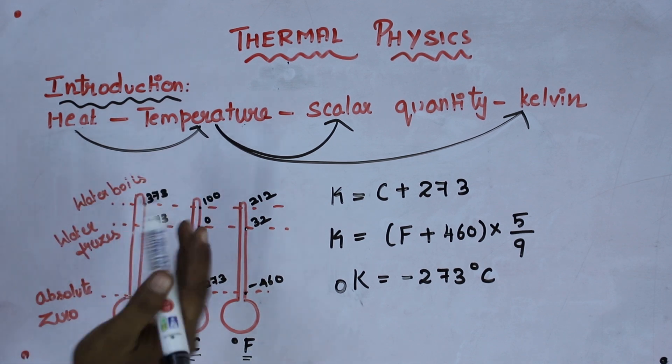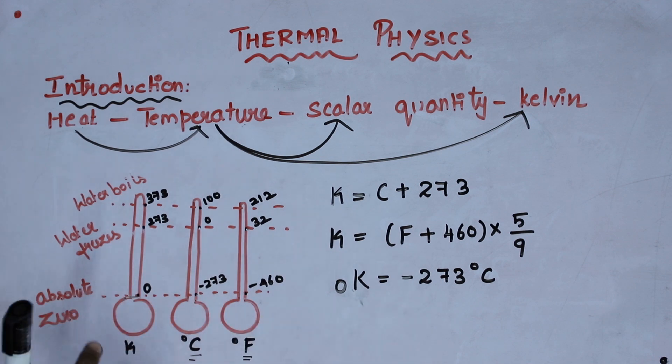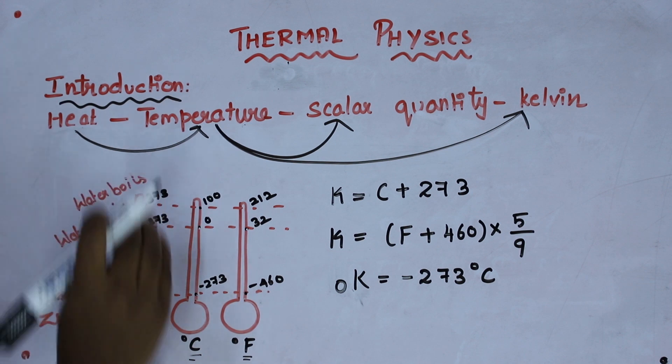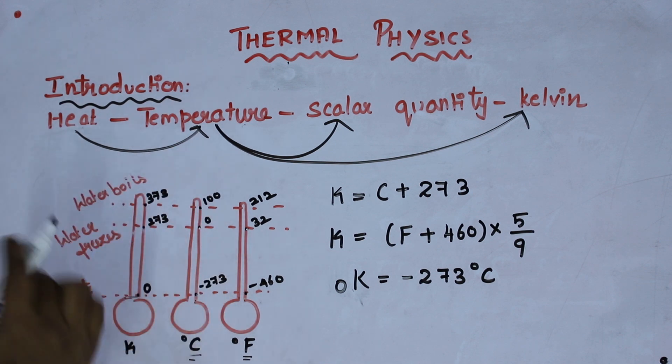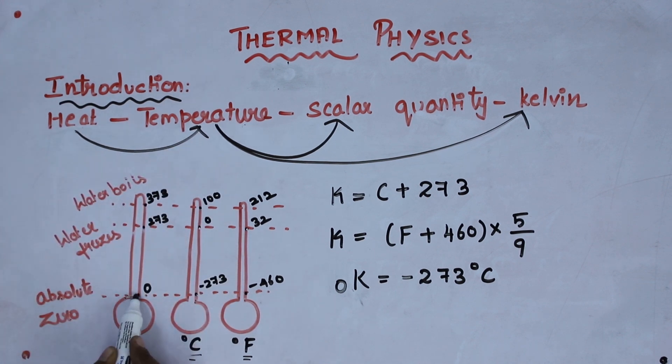I have drawn and shown you the difference between the Kelvin scale, Celsius scale and the Fahrenheit scale. All differ with the values. Here the starting point for Kelvin is 0, absolute 0. Whereas in Celsius it is minus 273, and in Fahrenheit it is minus 460.